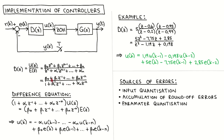The easiest way to realize the controller is to convert the transfer function to a difference equation. We do this by multiplying across, which gives us an equation, after which we perform the inverse z-transform and make u the subject of the equation. We can now see that the controller output at any time step u can be calculated from the n previous controller outputs as well as the current controller input and the n previous controller inputs.